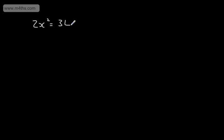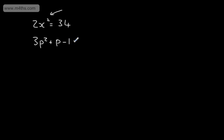An example might be 2x squared is equal to 34. This is a quadratic equation as we have x squared. We might also have 3p squared plus p minus 1 is equal to 0. Again, this is a quadratic equation because the highest power of p is p squared.